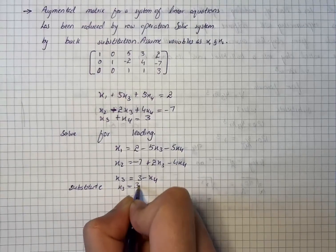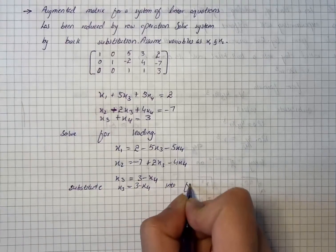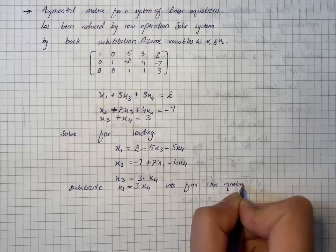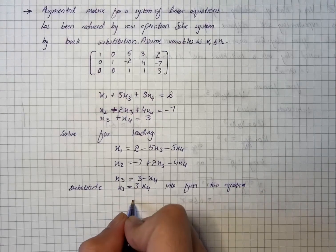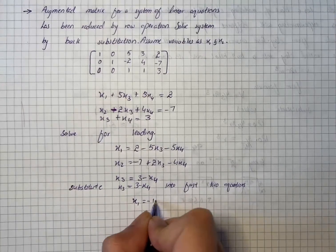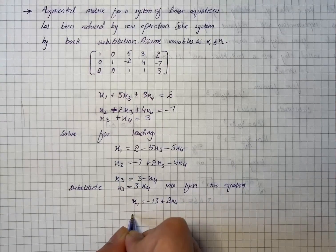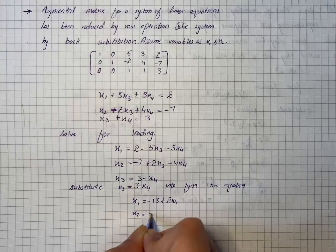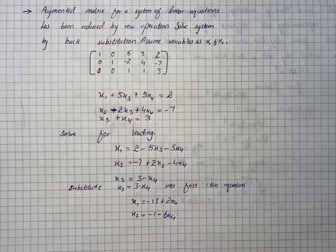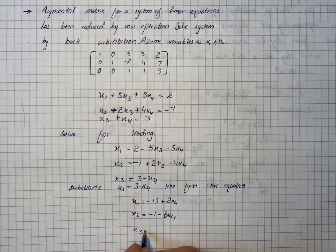So we will have x1 equals minus 13 plus 2x4, and then we have x2 equals minus 1 minus 6x4, and then we have x3 that is equal to 3 minus x4.